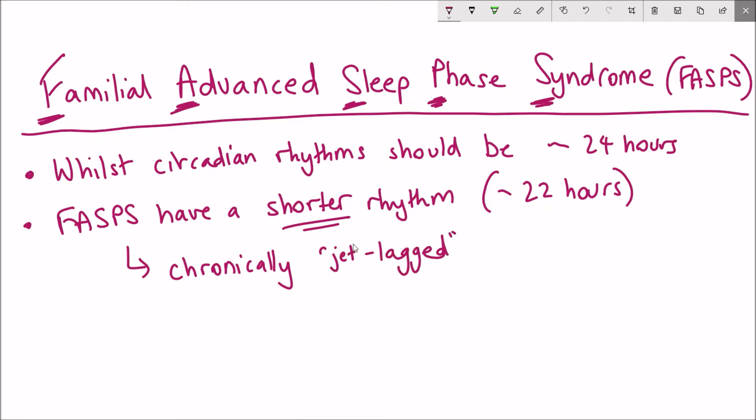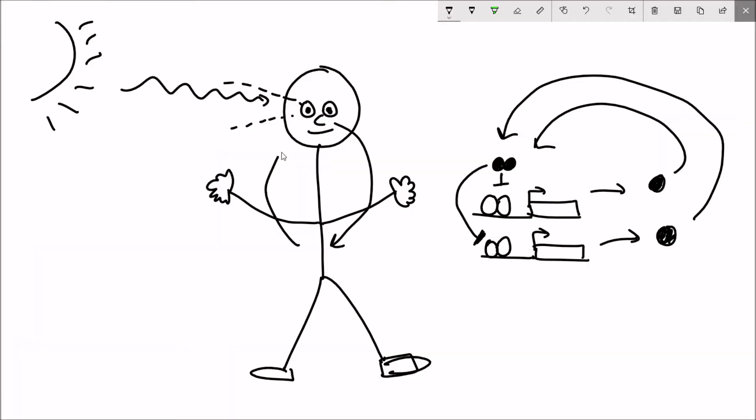One of the reasons that FASPS is referred to as a disease is due to the fact that whilst they have an around 22-hour rhythm, everything else like the sunset and the daily cycle on earth is still 24 hours.